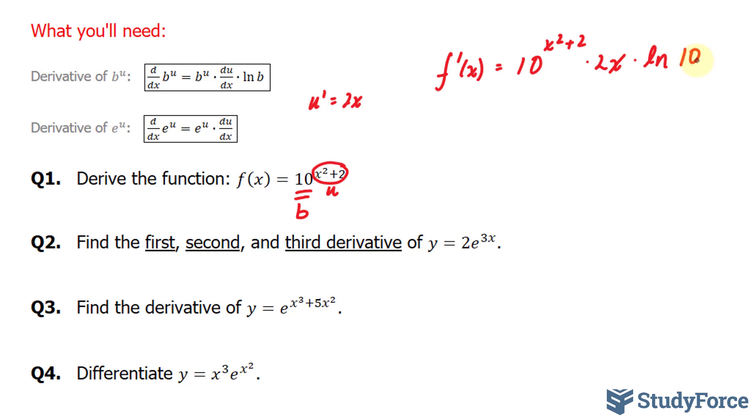Let's move on to question two. Find the first, second, and third derivative of y is equal to 2e^(3x). For this we'll use the following relationship and you'll be surprised on how easy this is. Let's start with y'.